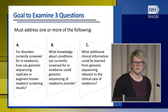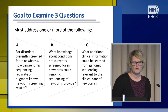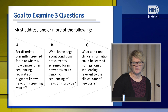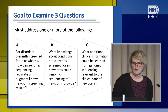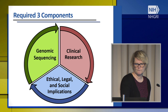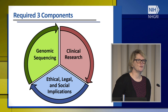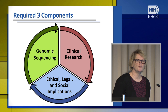Each of the projects that came in under this program had to address one or more of the following questions: For disorders currently screened for in newborns across the United States, how can genomic sequencing replicate or add to the knowledge of newborn screening? What knowledge about conditions not currently screened for could genomic sequencing provide? And what additional clinical information could be learned from genomic sequencing relevant to clinical care in newborns? Each project has three components: the technical component — the genomic sequencing; the clinical research, looking at clinical care of the infant; and the ethical, legal, and social implications of doing sequencing at such a young age.